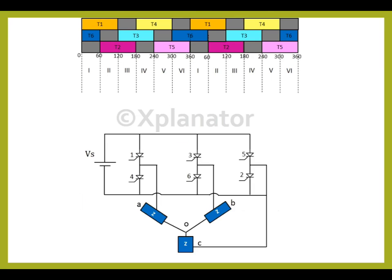When in step 1, that is from 0 to 60 degrees, thyristors 6 and 1 are working simultaneously. Similarly, in step 2, 1 and 2, step 3, 2 and 3, step 4, 3 and 4, step 5, 4 and 5, and in step 6, thyristors 5 and 6 are conducting together. This pattern repeats for further cycles. We will now see how the circuit behaves in each step.